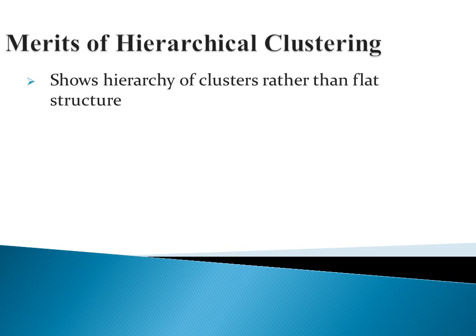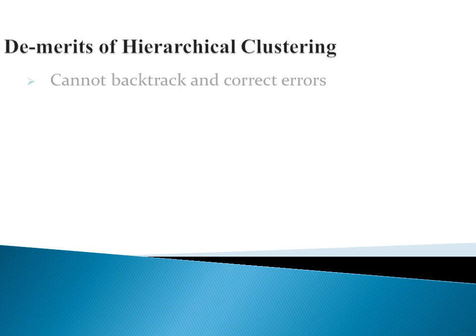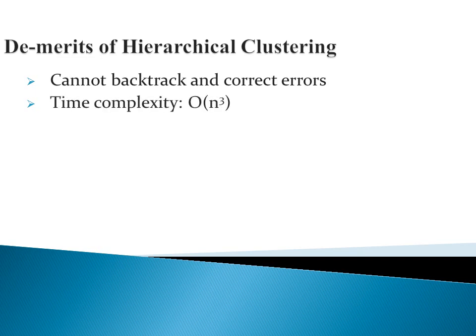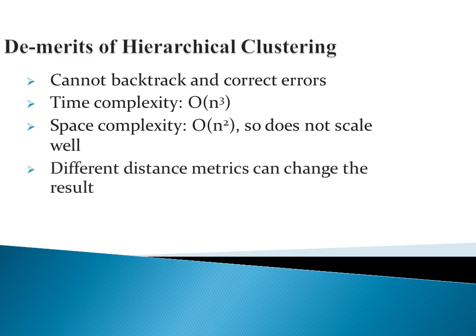The merits of the hierarchical algorithm: it shows the hierarchy of clusters rather than a flat structure, it is simple and easy to implement, and we can see clusters at different levels of granularity. The demerits of hierarchical clustering: first, we cannot backtrack and correct errors — if we encounter any error in merging, we cannot backtrack. Second, time complexity is of the order O(n³). Third, space complexity is of the order O(n²), meaning this method does not scale well as the size of data points increases. Additionally, different distance metrics such as single link, complete link, or average link can change the result — this variability in results based on distance metrics is the main disadvantage of hierarchical clustering.